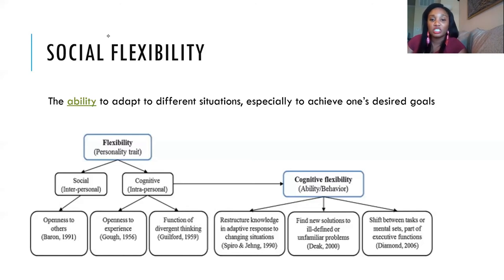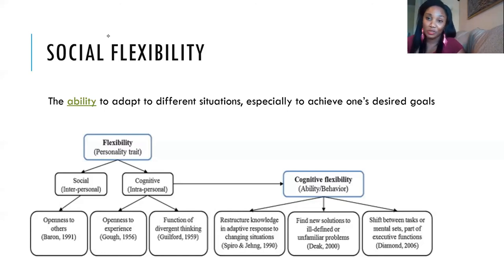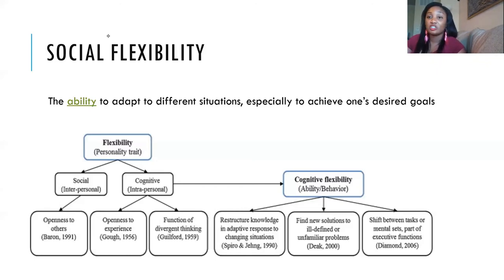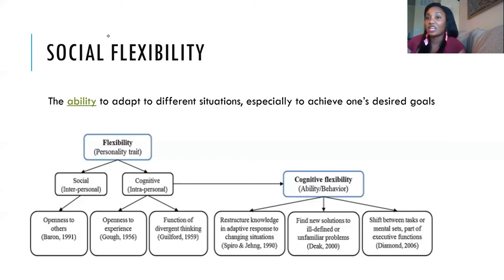Next is finding new solutions to ill-defined or unfamiliar problems — this is the ability to think outside the box. What worked for one relationship is not necessarily going to work for the next relationship, so you've got to get creative. And a lot of times here's a trick: just ask. Just say, 'What would make you happy? Do you like chocolates?' Just ask and then do it.